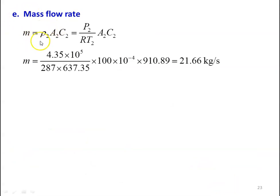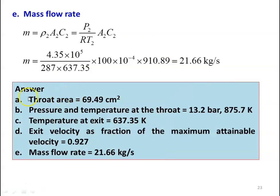The mass flow rate M equal to rho2 A2 C2, where rho2 equal to P2 by R T2. Substituting values: 4.35 into 10 power 5 divided by 287 into 637.35, area equal to 100 into 10 power minus 4, and C2 equal to 910.89, giving mass flow rate equal to 21.66 kilograms per second. Answer: throat area equal to 69.49 centimeter square, pressure and temperature at throat 13.2 bar and 875.7 Kelvin, exit temperature 637.35 Kelvin, exit velocity fraction 0.627, mass flow rate 21.66 kilograms per second.